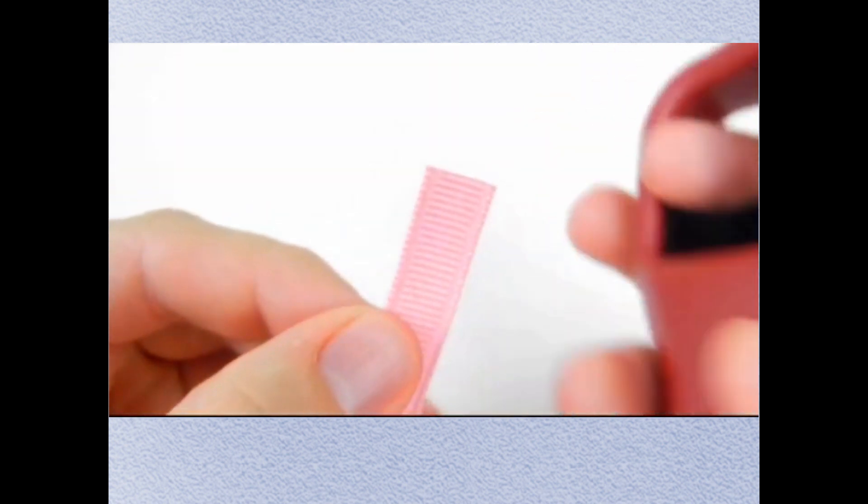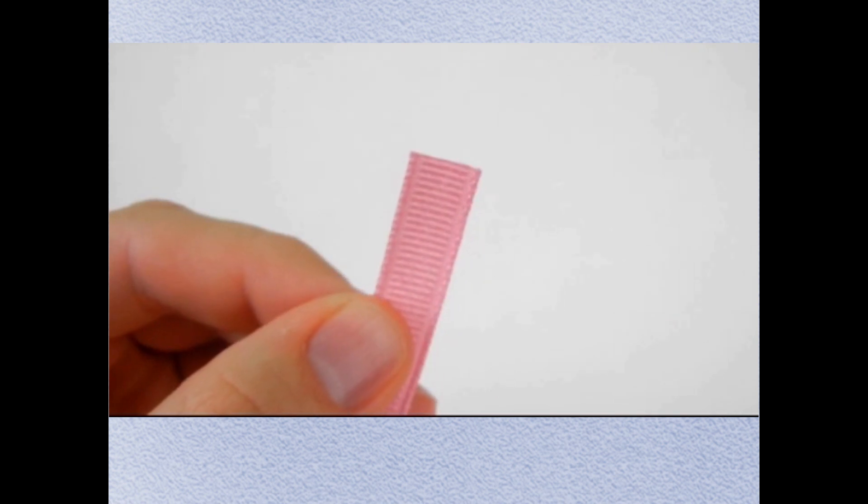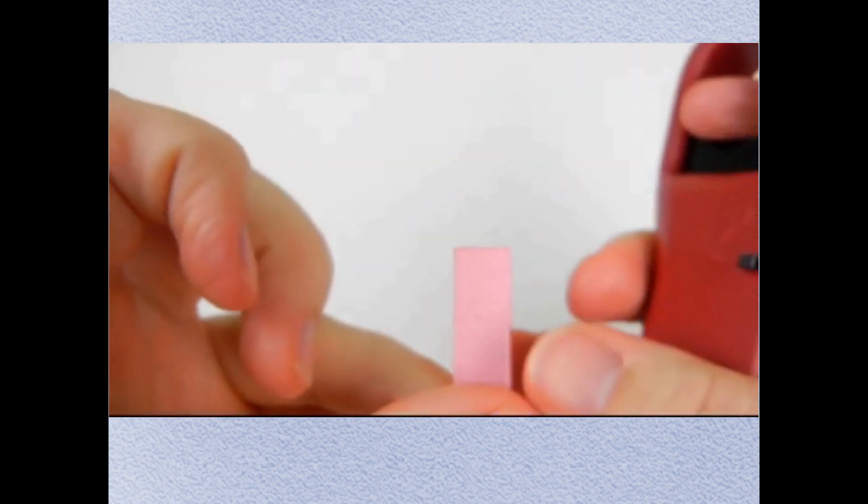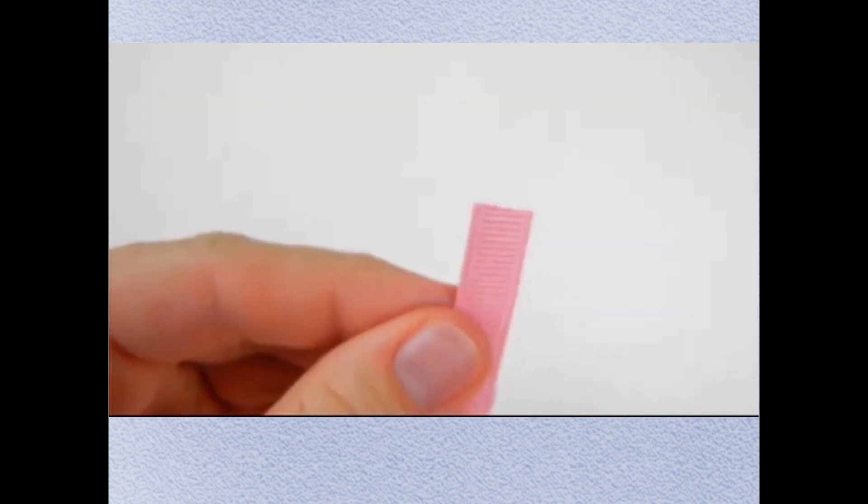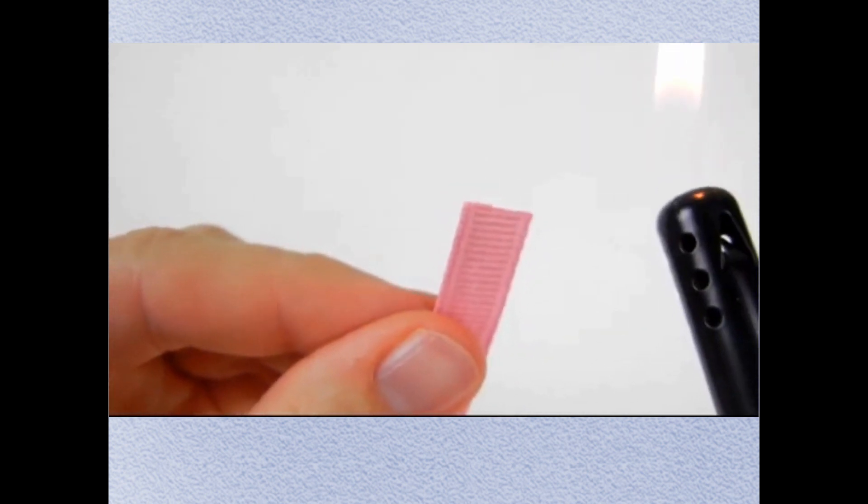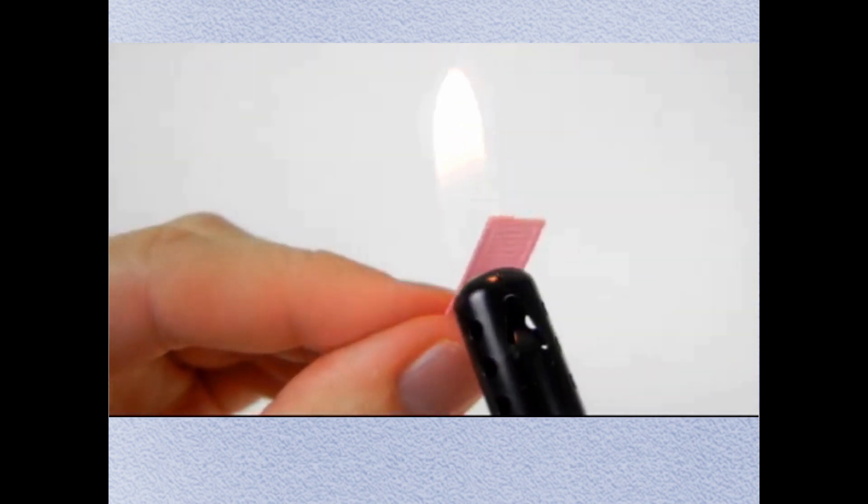Now, you get your end of your ribbon, and then you're going to quickly go over the ribbon like this. Sometimes I'll go back and forth a couple times, or you can go slowly once, but I find that going back and forth quickly works better for me.